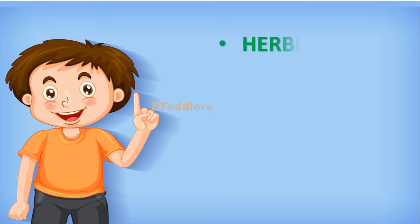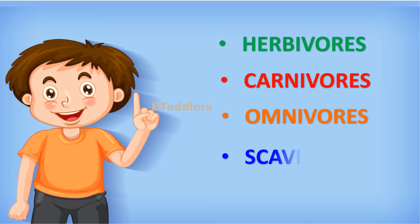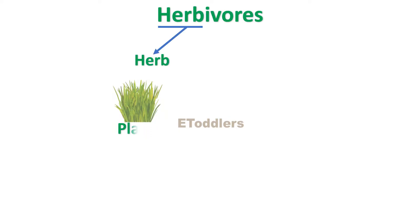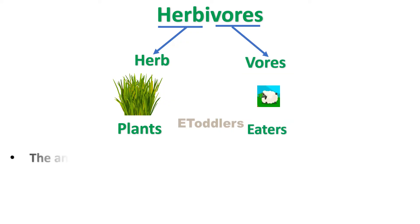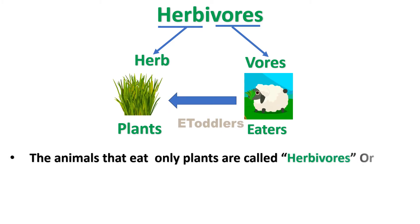Herbivores, carnivores, omnivores, and scavengers. Herbivores — 'herb' means plants, 'vores' means eaters. The animals that eat only plants are called herbivores, or plant-eating animals.